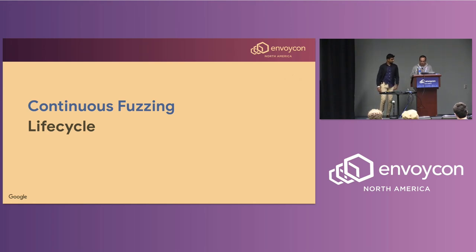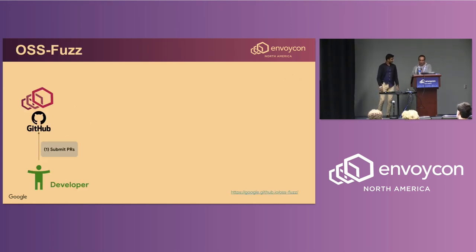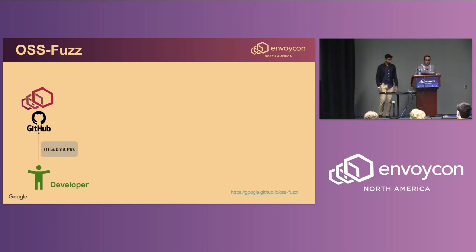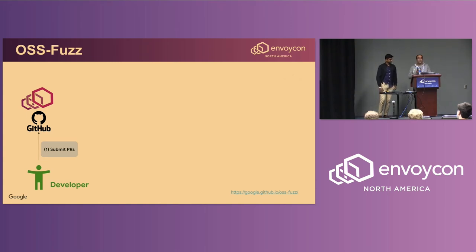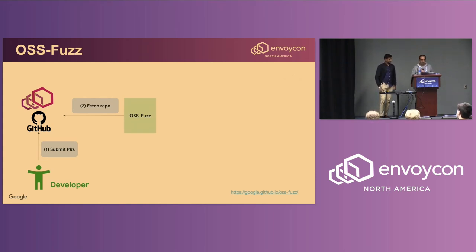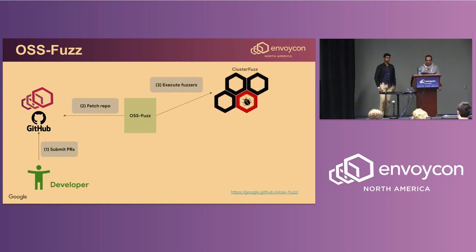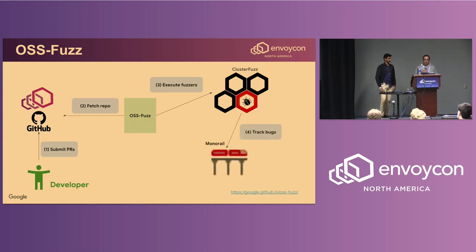Let's talk about the infrastructure and lifecycle of a fuzzer. We use OSS Fuzz, a project by Google that facilitates the execution and management of fuzzing for open source projects. It does continuous fuzzing by repeatedly fetching the latest version of the project source code from GitHub, building its fuzzers, executing them, and tracking any open bugs. On a daily basis, OSS Fuzz fetches the Envoy proxy repo's main branch and builds all the fuzzers. It then uses ClusterFuzz, also provided by Google, to execute all the fuzzers and detect errors. Whenever an error occurs, a bug is added into the Monorail system.